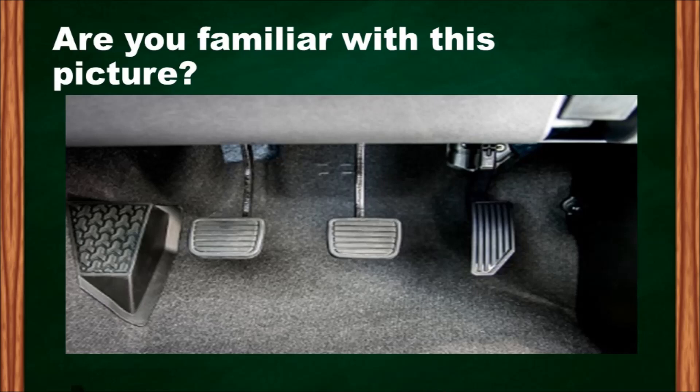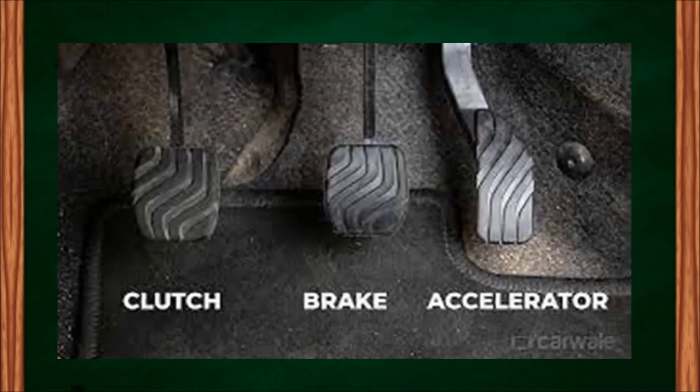Are you familiar with this picture? Can you identify where you can see these objects? These are normally seen in your cars — we call them the clutch, the brake, and the accelerator. This has something to do with our topic for today. Let's discuss acceleration.